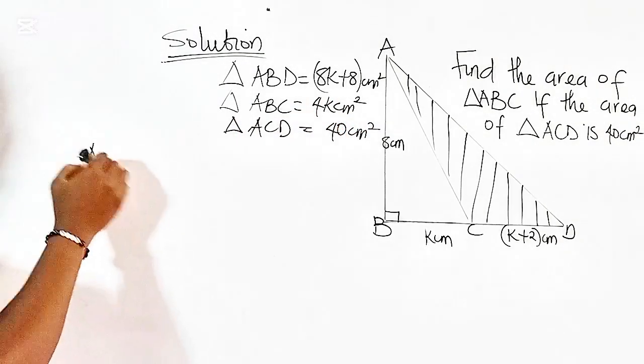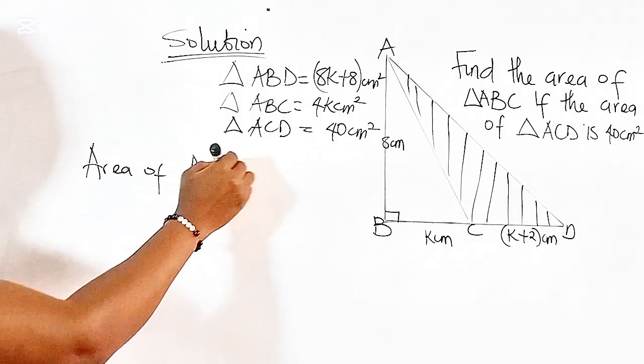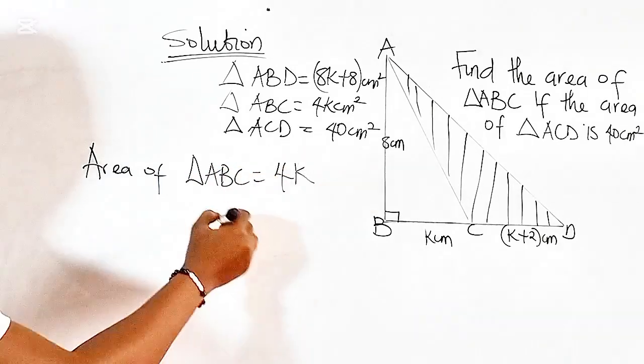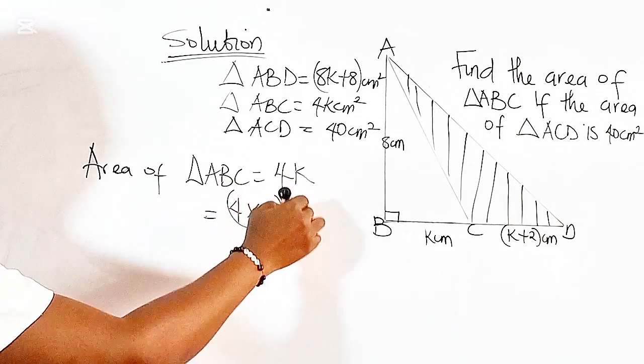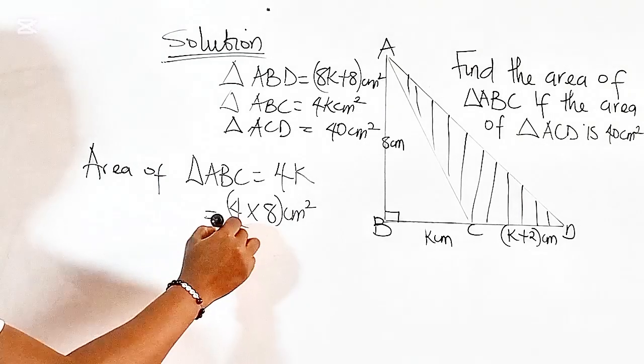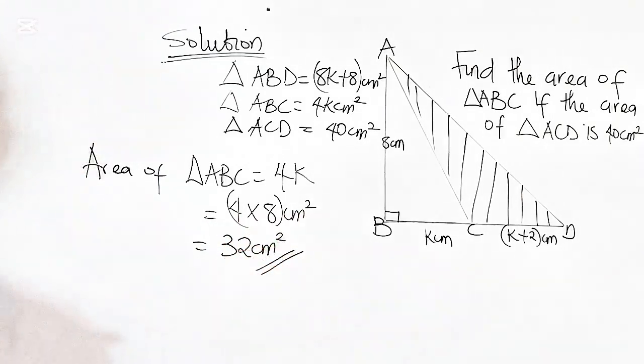If the area of triangle ABC is equal to 4K and K equals 8, we have this as 4 times 8. Therefore, the area of triangle ABC is equal to 32 cm squared. And this is our answer.